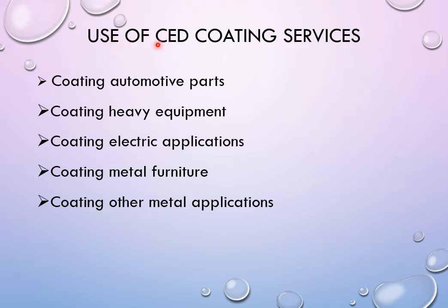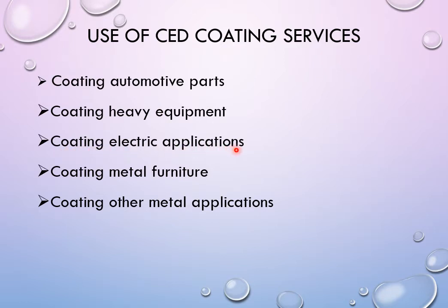Why do we use CED coating? It is a very attractive coating for automotive parts. Coatings can be used for heavy equipment like car bodies, tractor bodies, tractor components, and combined parts as well. It is an electrical application process — once we apply the paint, we use an electrical charge: we give a negative charge to our component and a positive charge to the paint.